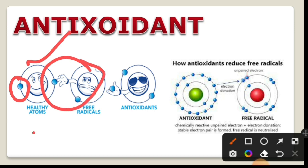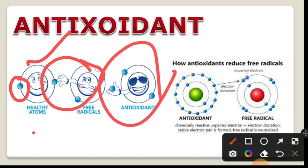The antioxidant steps in and donates an electron to the free radical, neutralizing it. The antioxidant gives its electron to the unpaired electron of the free radical, stopping the damage cycle and stabilizing the molecule.